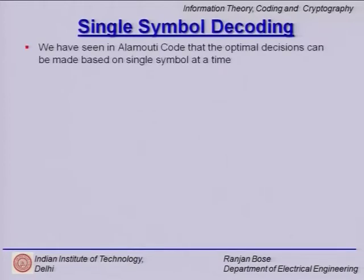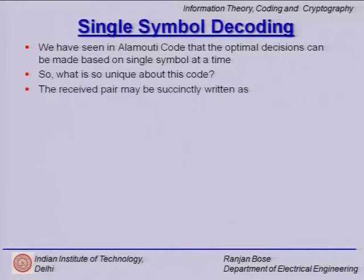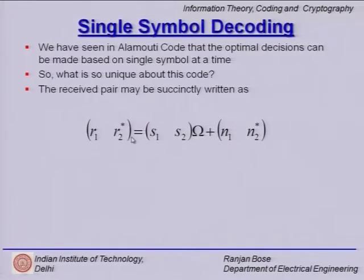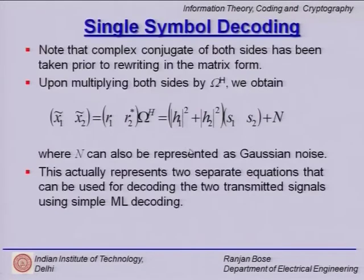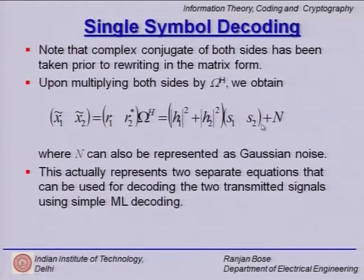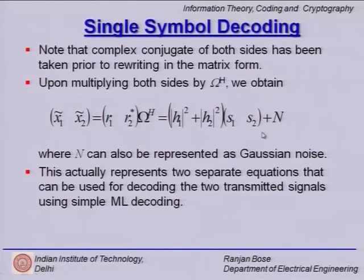A few words about single symbol decoding: we have realized the uniqueness of this Alamouti code because the pair (R1, R2*) is dependent only on S1 and S2 independently. You can have the estimates of x1 and x2 as simply (|H1|² + |H2|²)·S1 and S2. Basically, x1_tilde depends only on S1 and x2_tilde depends only on S2 — this is the single symbol decoding which drastically reduces the complexity at the decoder.